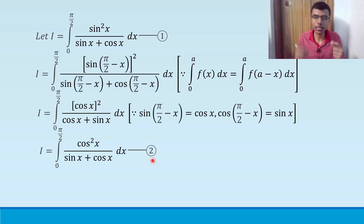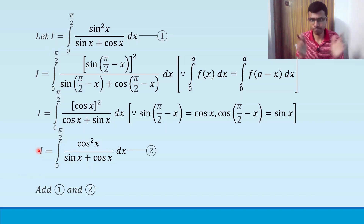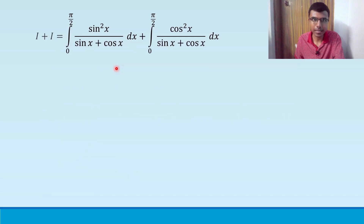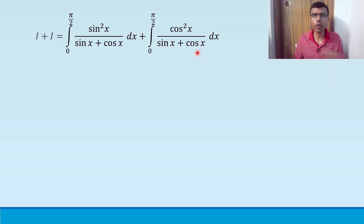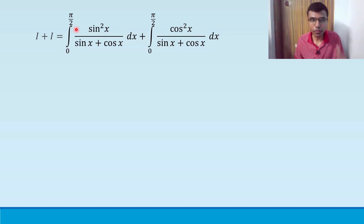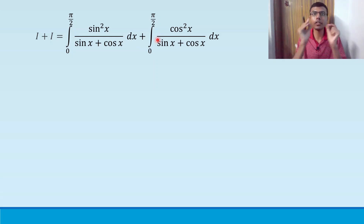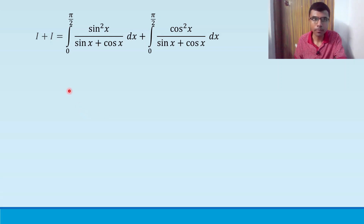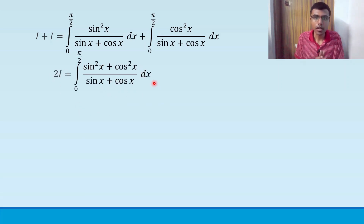Now I'm going to add the two equations — equation one and equation two. If I do that, the left-hand side is I plus I, giving 2I. The two integrals will be added up. An interesting point to observe is that in the denominator, both have sinx plus cosx. The first has sin²x in the numerator and the second has cos²x. Since the limits are also the same, I can combine them under one integral and just add up the numerators.